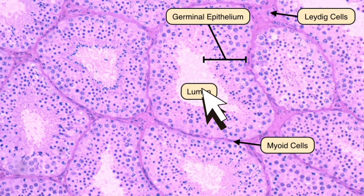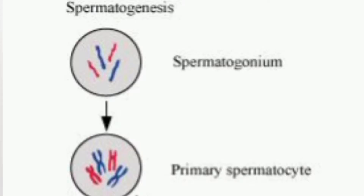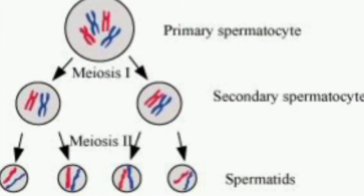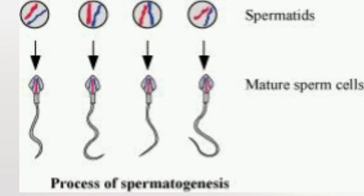The sequence of developmental stages is as follows: spermatogonia undergo mitosis to form primary spermatocytes, which are diploid in number. These undergo meiosis I to form secondary spermatocytes, which become haploid. The haploid secondary spermatocytes undergo meiosis II to form spermatids. The spermatids then undergo further changes and form spermatozoa. All these stages are clearly visible in the TS of testis.